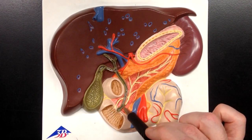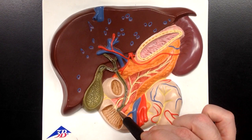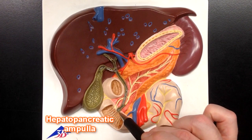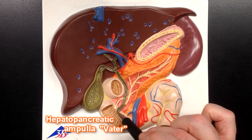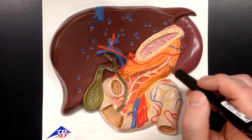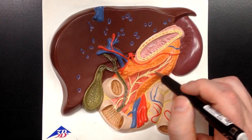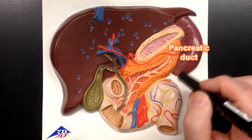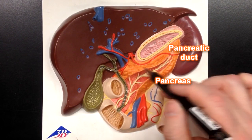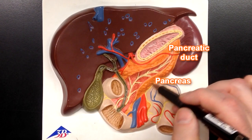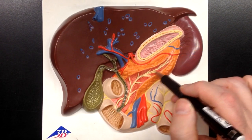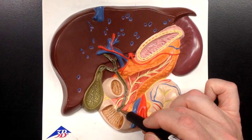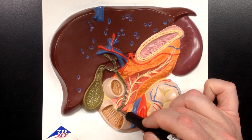This common bile duct is going to terminate down here at the hepatopancreatic ampulla, also known as the ampulla of Vater. This yellow duct right here is going to be the pancreatic duct. This orange structure right here is the pancreas. This pancreatic duct will bring pancreatic juice into this hepatopancreatic ampulla as well.